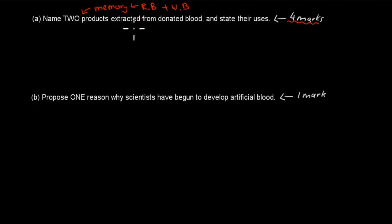Immunofactors, plasma, the different parts. But the ones I've chosen, so it only says name two, are the red blood cells and the white blood cells.